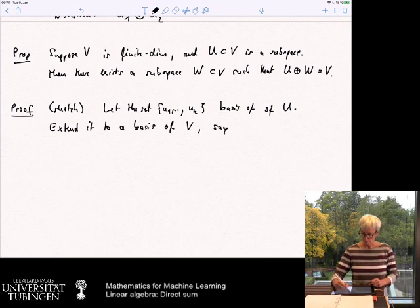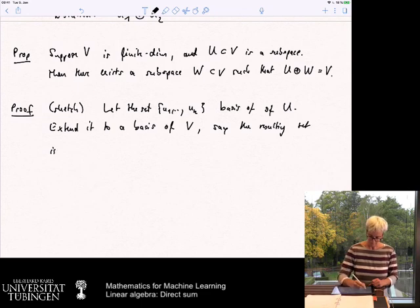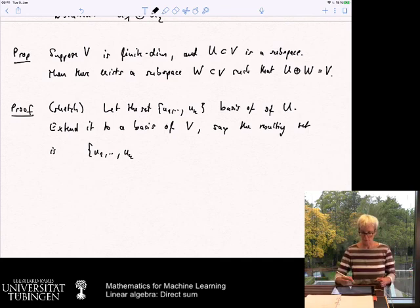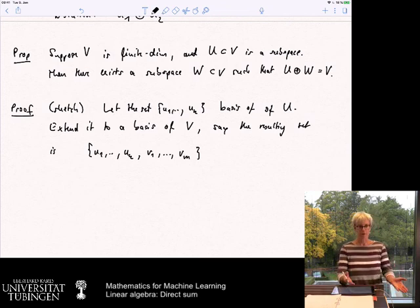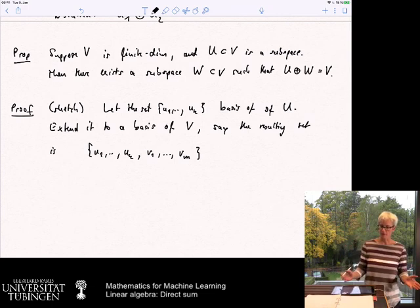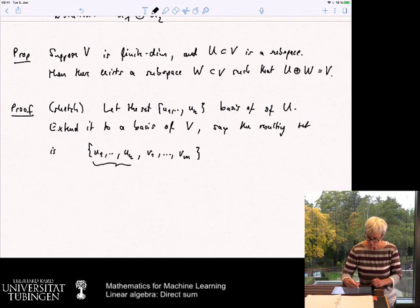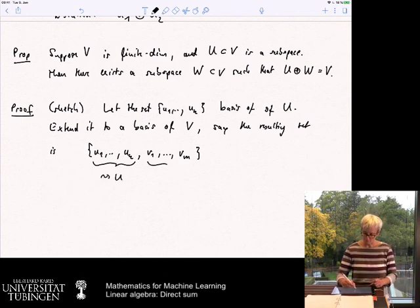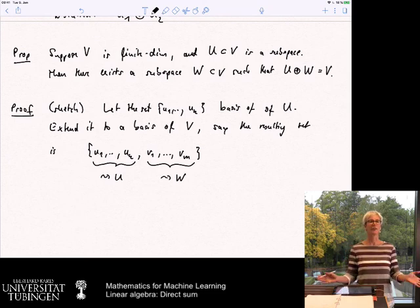Say the resulting set is, so we might have u1 to uk. And unless u has been the complete space, there will be more vectors, v1 to vm. So, say this is the resulting set. This is now a basis of our vector space. And now we define, so the first vectors here, this is what gives us u. And now we simply define these other vectors as the ones that give us w.